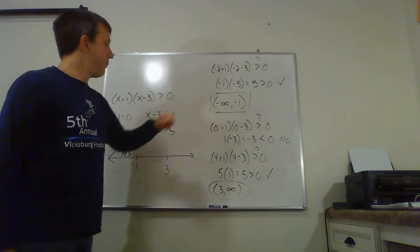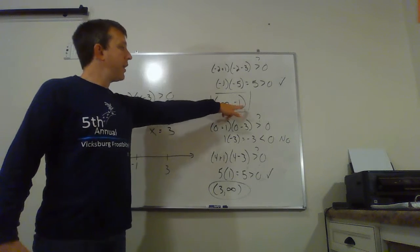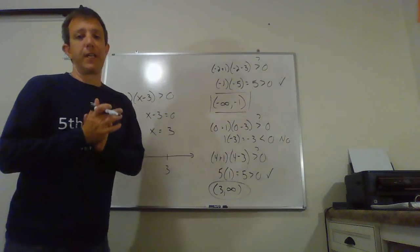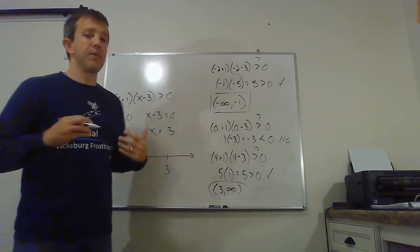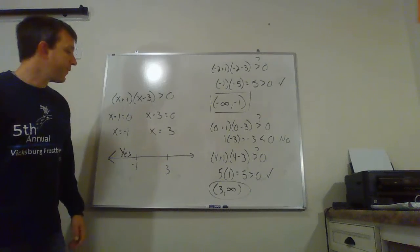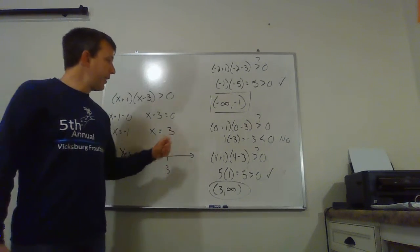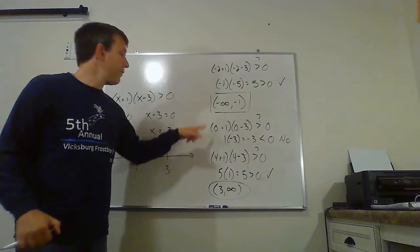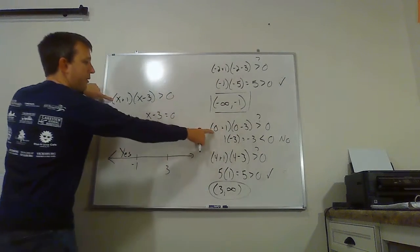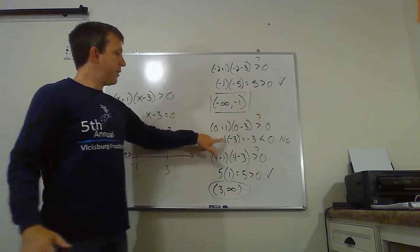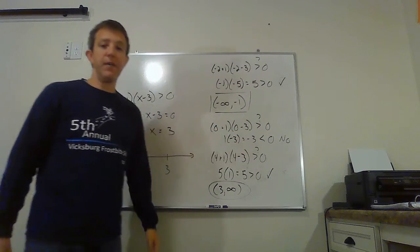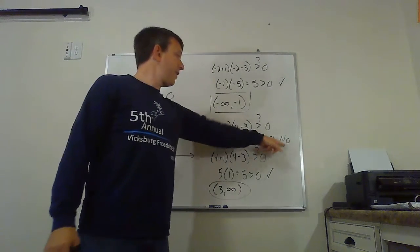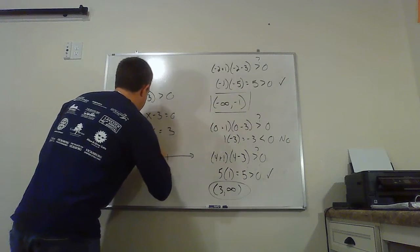I wrote out my interval from negative infinity to negative one, and I used a parenthesis there because I don't want to include the negative one. We have strictly greater than zero, so we can't use that boundary point. Next, I picked a point in between negative one and three. For that, I used zero because I like zero and it's in between negative one and three. If I plug in zero, zero plus one times zero minus three, I get one times negative three, which is negative three. That's less than zero. We needed it to be greater than zero. So I don't want that interval.